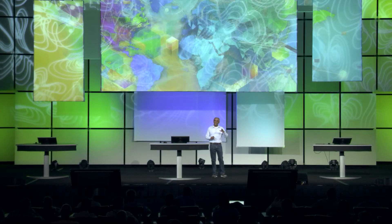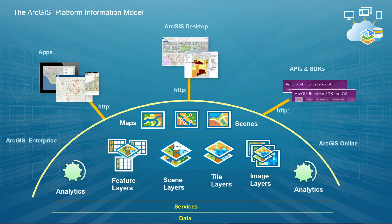This slide drills into that information model tier. It shows how applications and developer applications built using our APIs connect to the platform and work with these high-level information model elements: the maps, the scenes, the layers. They really abstract the information. They serve multiple purposes within the ArcGIS platform, allowing end-users to author them using familiar applications and expose them as very tangible things — maps and layers.